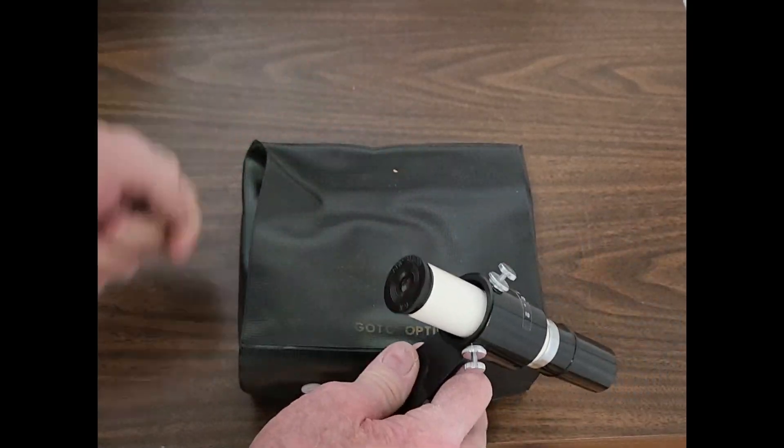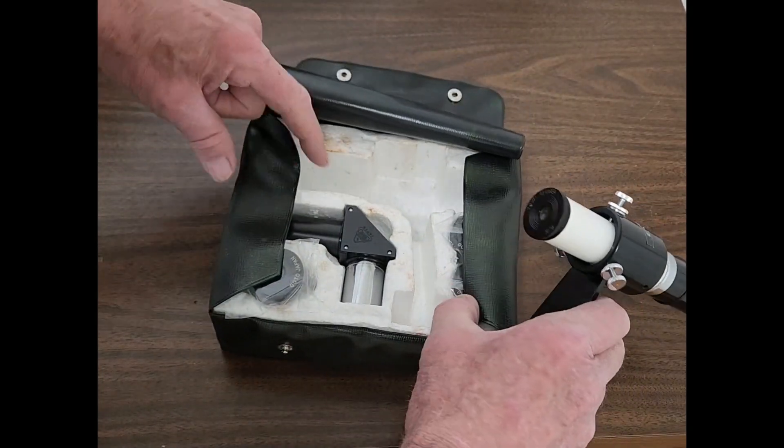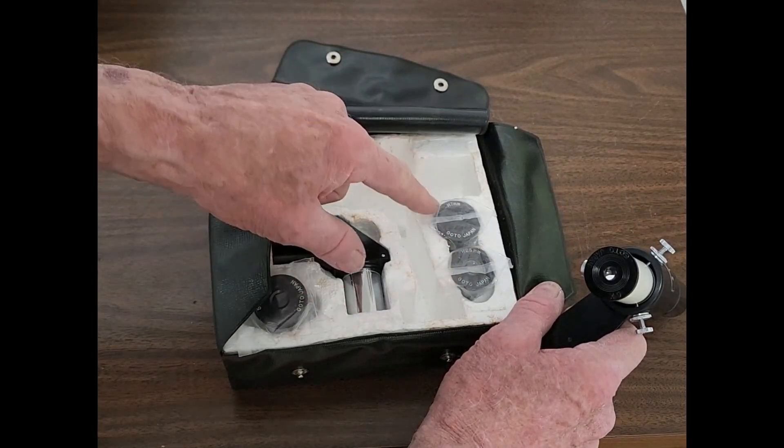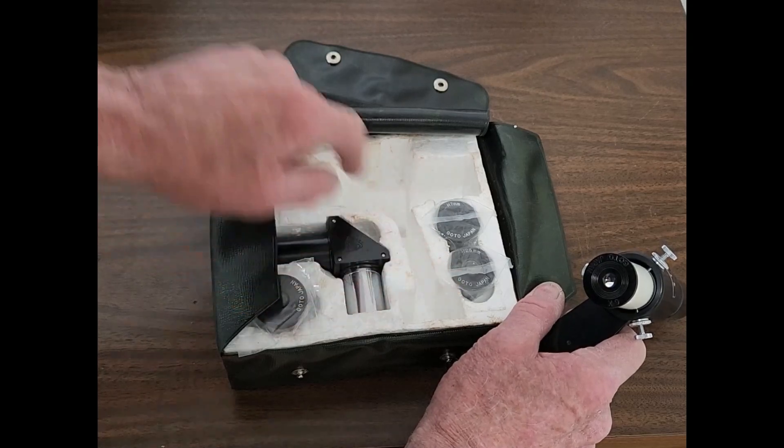Here's how the finder goes in the storage case. This is very cute. All original. A couple of eyepieces. A 7mm and a 25mm.